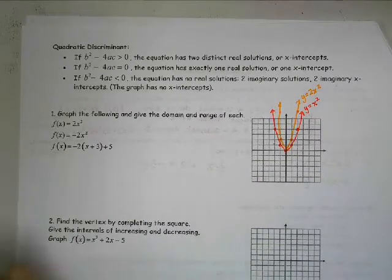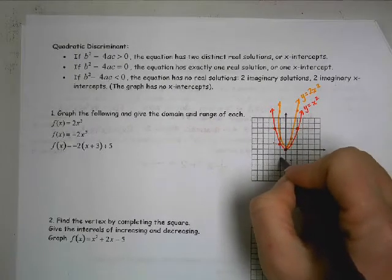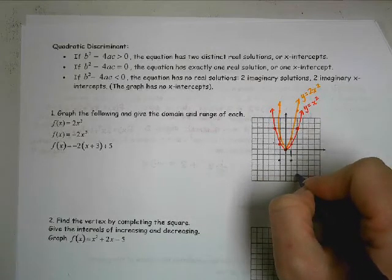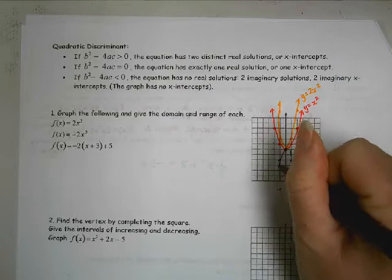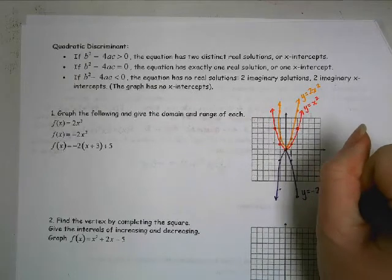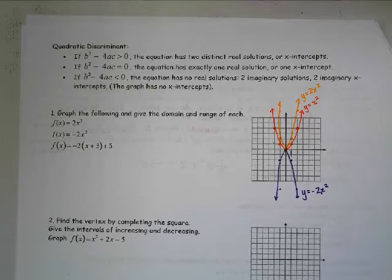Y equals negative 2x squared. It's going to look just like that one, but upside down. So I'm going to go still 0, 0, over 1 and down 2, and then over 2, down 8. So far, are you all okay with the graphing? Yes. All right.